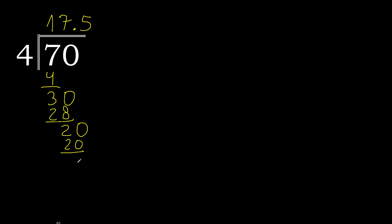20 minus 20 is 0. Therefore finish. Therefore 70 divided by 4 is 17.5.